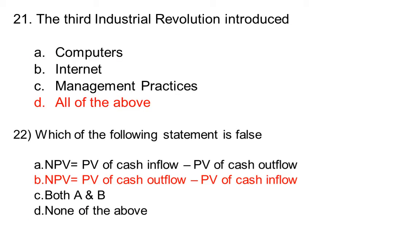The third industrial revolution introduced: option A computer, option B internet, option C management practices, option D all of the above. The correct answer is option D, all of the above.